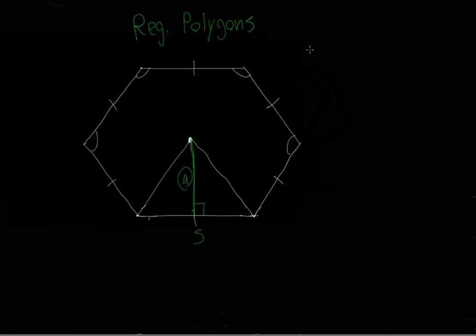To find what each angle equals, we need to know how many angles are inside. The formula is 180 degrees times the number of sides minus two. Let's check: for a triangle, three minus two is one, times 180 equals 180 — that looks right. For four sides: four minus two times 180 equals 360. So this formula checks out.